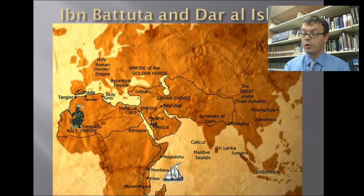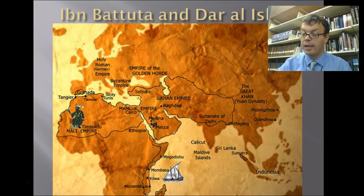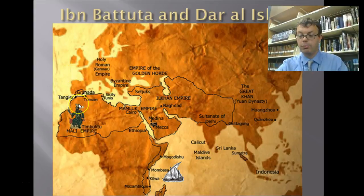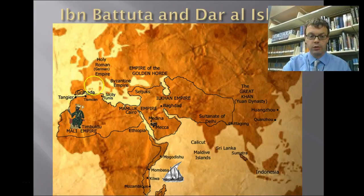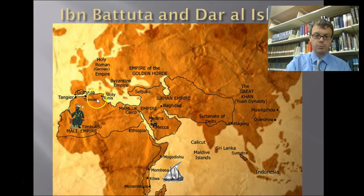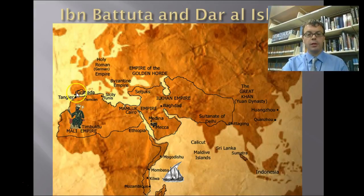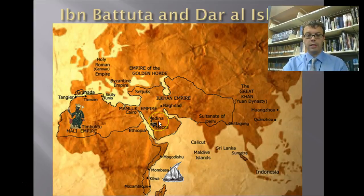Ibn Battuta starts his travels when he's 20 years old in 1325. He is from Morocco, he is a Muslim, he speaks Arabic, and he's well-read and understands Muslim law, which is really important. He goes on his Hajj, which is his pilgrimage to Mecca. Every Muslim is supposed to go to Mecca at least once in their life. Ibn Battuta makes his Hajj, goes to Mecca, and then he doesn't stop traveling — he keeps traveling.